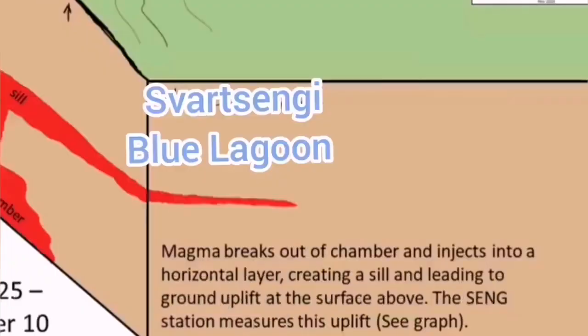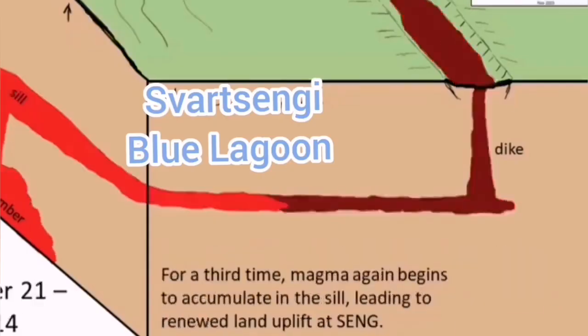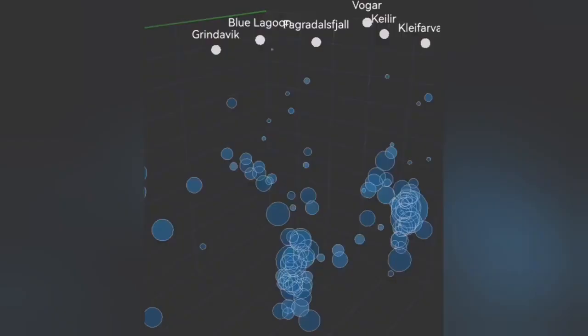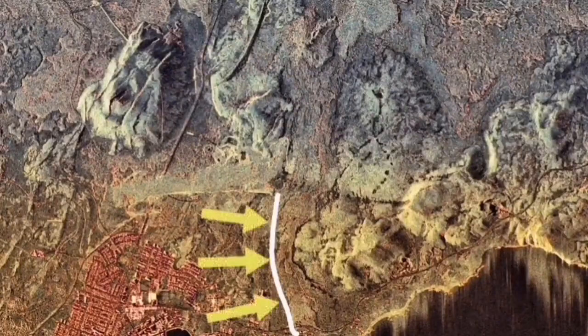I think there is a possibility the next one will be toward Grindavik. Based on what we see, the sill will lead to an eruption in that area at that angle. There is a good chance we may have a recurrence of what we saw in the January eruption around Grindavik.